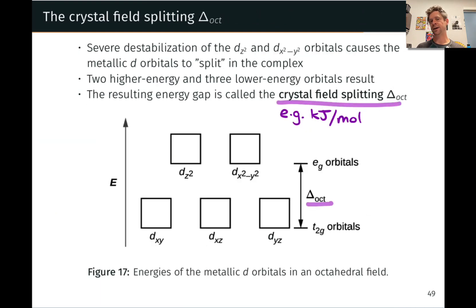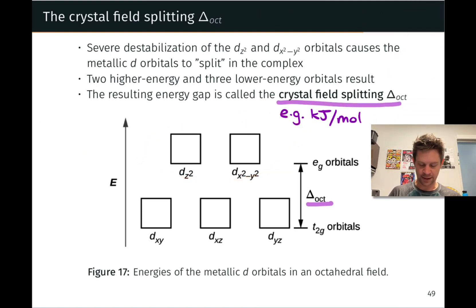The resulting orbital energy diagram for the d orbitals looks like this. Here are our destabilized dz squared and dx squared minus y squared orbitals, and here are our three relatively not so badly destabilized d orbitals down here. So we can think of the d orbitals which are all degenerate, all of the same energy in the naked transition metal cation, splitting into two higher and three lower energy orbitals in the presence of an octahedral field, an octahedral arrangement of negative point charges. This creates an energy gap. The energy gap is known as delta-oct. Delta refers to the crystal field splitting and oct to the octahedral geometry. And this delta has very important implications for the spectroscopic properties, the color, and the magnetic properties.